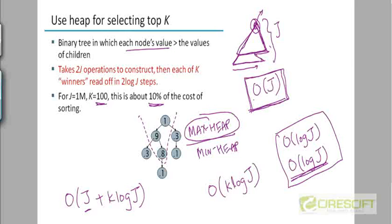So instead of sorting the whole list and then picking the top K, you build a heap of those J elements and then extract the top K. That will be more efficient.